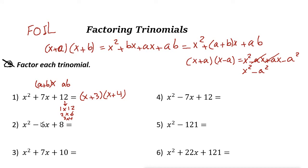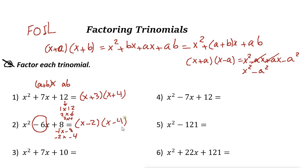Next: the sum of two numbers is negative 6 and their product is 8. We need negative factors of 8: it could be negative 1 times negative 8, or negative 2 times negative 4. Negative 1 plus negative 8 is not negative 6, but negative 2 plus negative 4 is negative 6. So the factors are (x − 2)(x − 4).